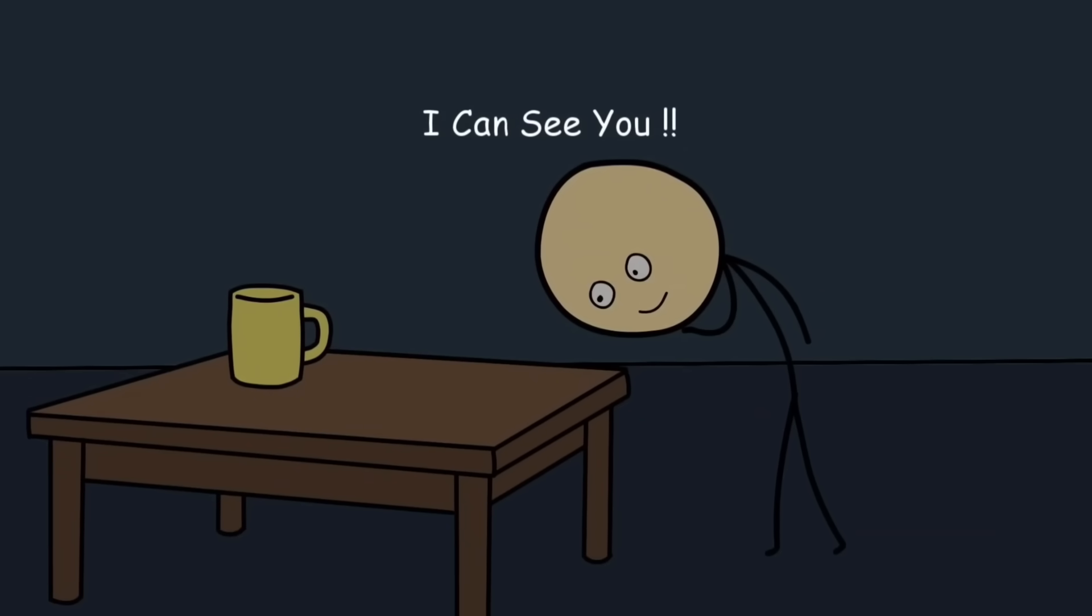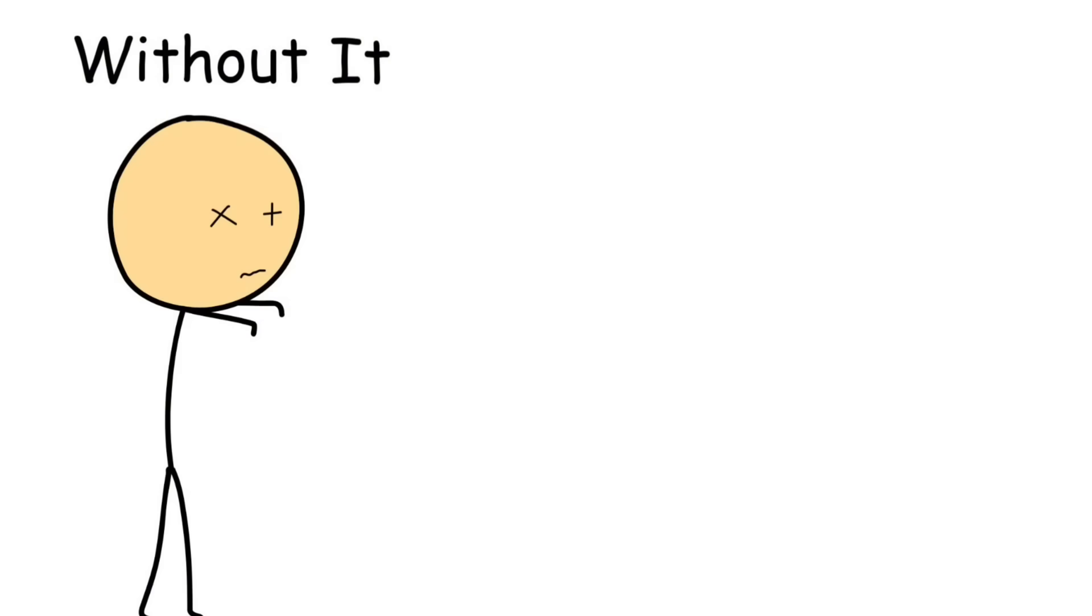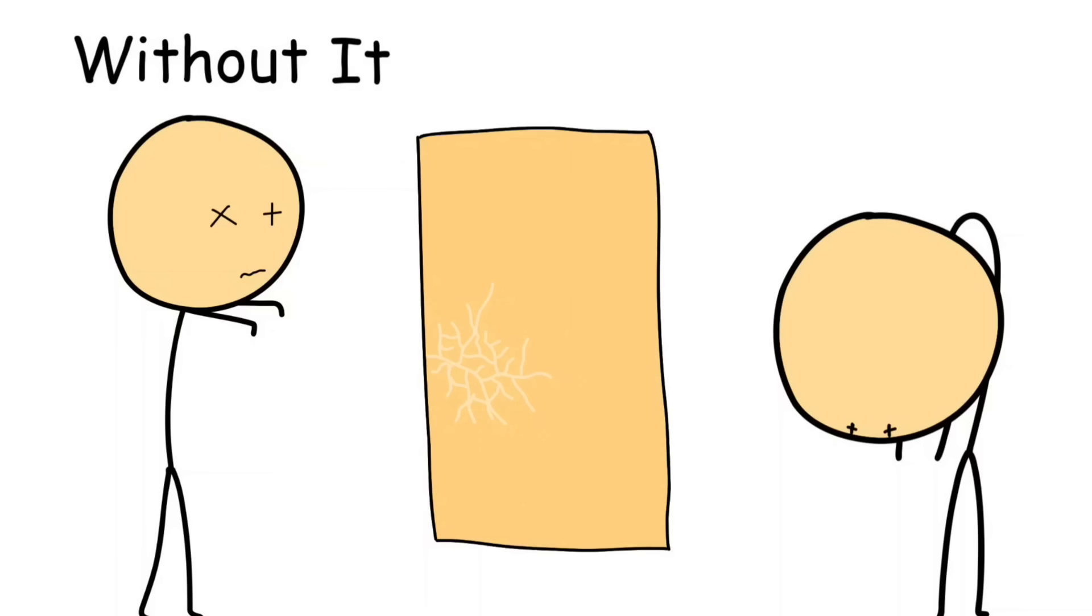Vitamin A is the reason you can see in the dark, or at least why you don't trip over your coffee table every night. It's essential for your eyes, skin, and immune system. Without it, your vision starts to fail, your skin dries out like old leather, and your body's defenses collapse.